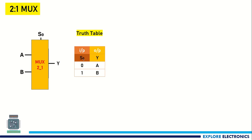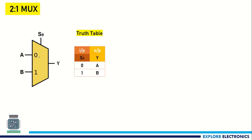You can see in the truth table here: I have taken input as S0 and output as Y. When S0 is equal to 0, whatever is at A will appear at output Y. Similarly, when S0 is equal to 1, input B will appear as output. This is what the 2-to-1 multiplexer is, and we represent it with more inputs on the input side and only one output — that is the symbol for any multiplexer.